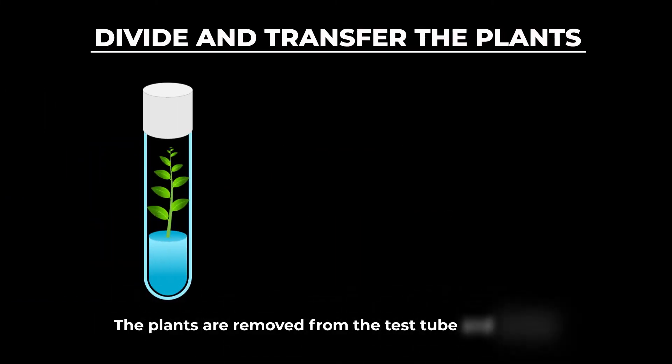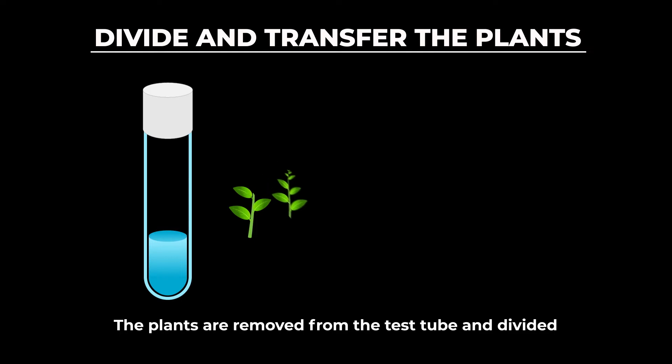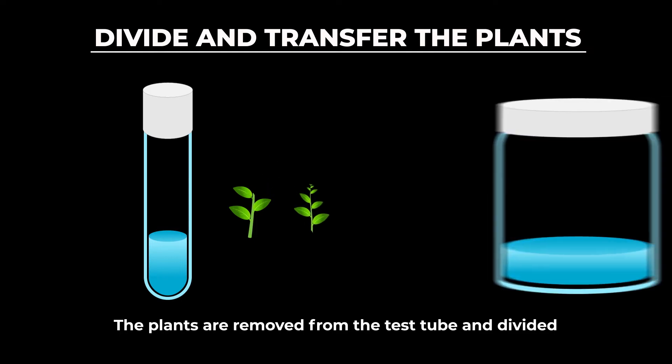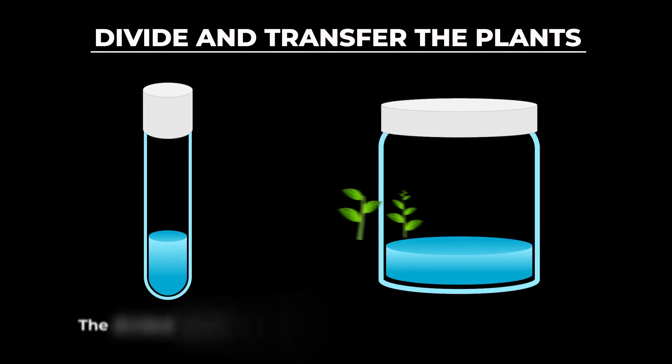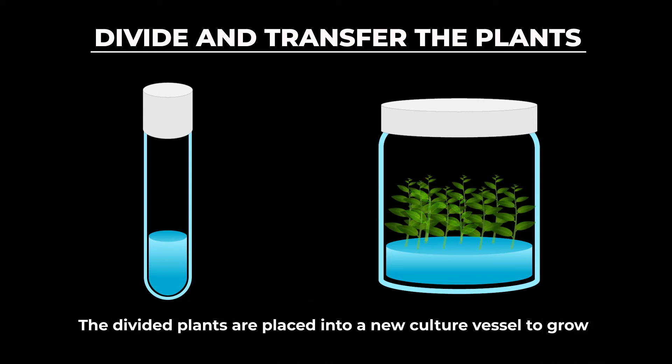This brings us to our next stage in the process: multiplication. During the multiplication stage, the plants are divided and placed into new containers or culture vessels with a solution that will encourage the plants to grow multiple shoots as they develop and grow taller.